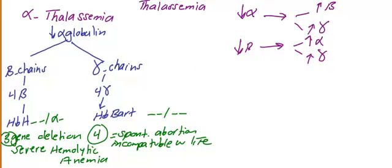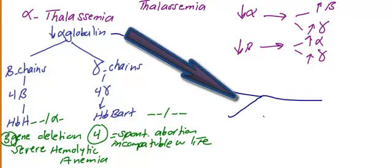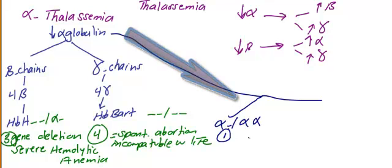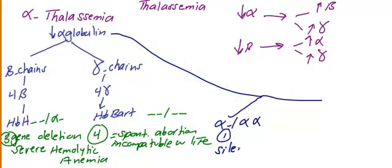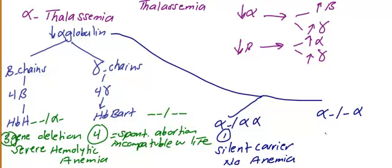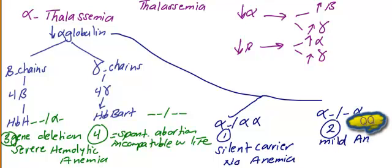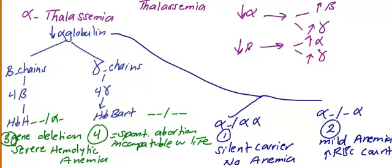Three gene deletion is written one way genetically, and four gene deletion is written another way. For the milder types: one gene deletion is called the silent carrier, with no anemia. Two gene deletion gives mild anemia with an increased red blood cell count.